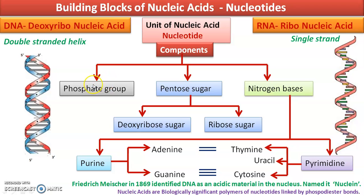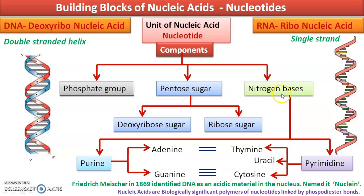DNA is double-stranded helical, whereas RNA is single-stranded helical. Now, the nitrogen bases present in both DNA and RNA are again of two main types: purines and pyrimidines. Purines are of two types: adenine and guanine. These are all nitrogen-containing components — unlike sugar which has carbon, hydrogen, oxygen — these bases also have nitrogen, that is why they are called bases.